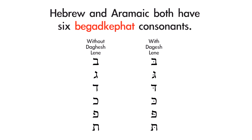The six Bagad-Kafat consonants are the Beit, the Gimel, the Dalet, the Kaf, the Pei, and the Tau. The column on the left represents those six forms without a Dageshlene — the softer pronunciations. For example, the Beit without a Dageshlene is pronounced softly like a V. But in the right column, you'll see the six Bagad-Kafat consonants with a Dageshlene in the middle. That Dageshlene hardens the pronunciation — so the Beit with the Dageshlene is pronounced hard like the B in boy.